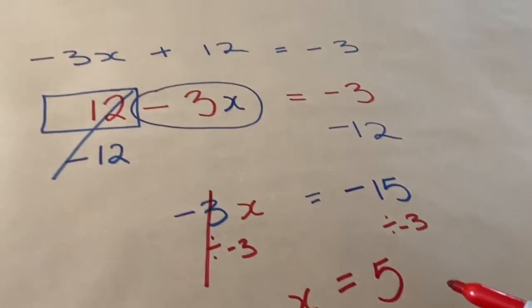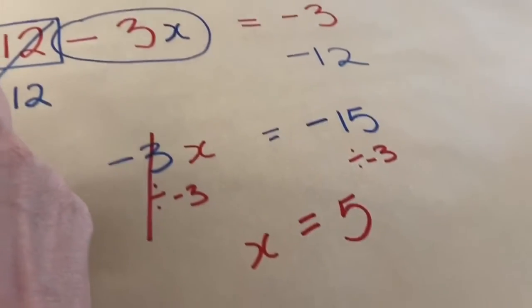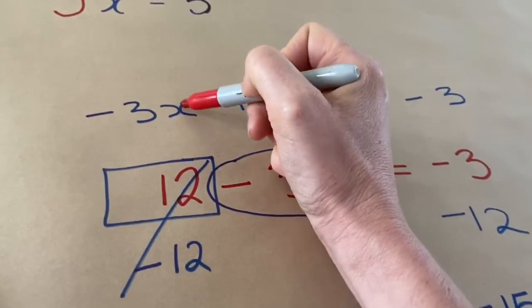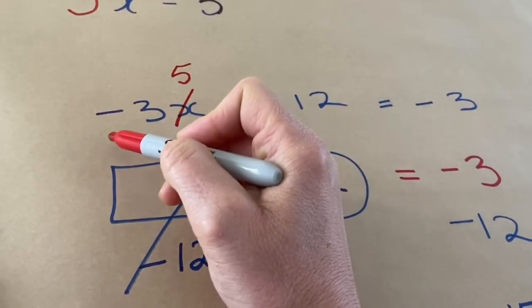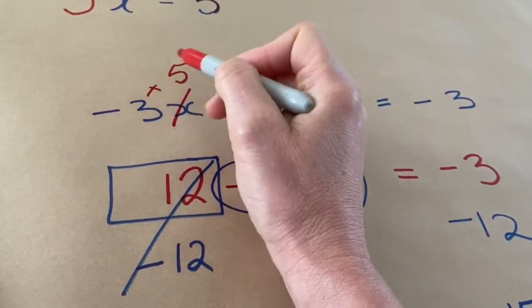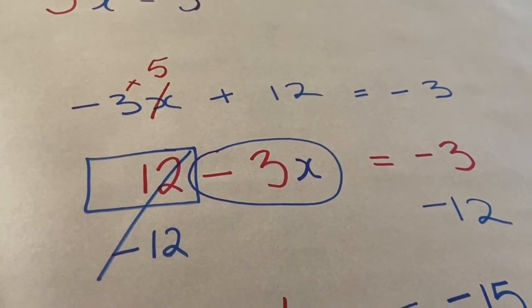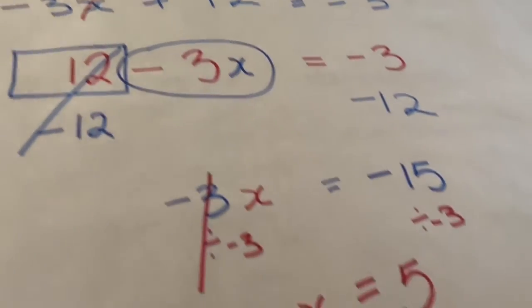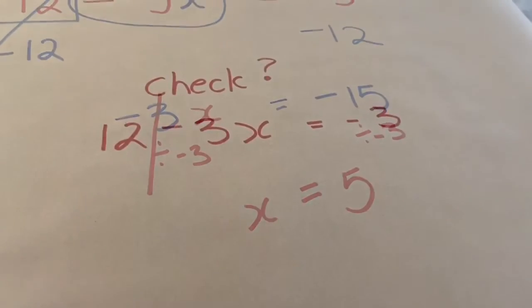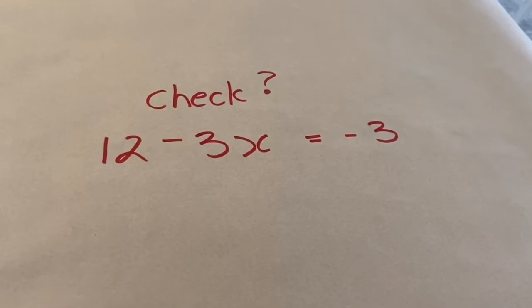And what you might want to do, a very good idea, is to check. If I, with my calculator, put a 5 right here. If I did negative 3 times 5 plus 12, you should get negative 3. If you don't get negative 3, it means you made a mistake with your algebra. There's actually another way you can check this.